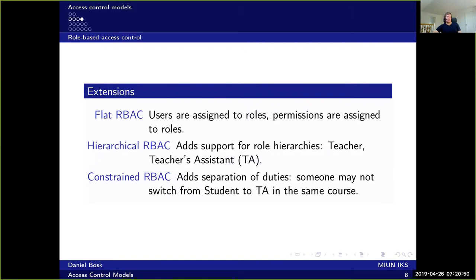The third extension is constrained role-based access control, which adds what is called separation of duties to the RBAC model. This means that someone is not allowed to switch between roles arbitrarily — there are some restrictions. For instance, you're not allowed to switch from student to teacher's assistant in the same course, because then you might be able to grade yourself. However, you're allowed to switch to the teacher's assistant role in another course. So you can define these constraints on the roles.